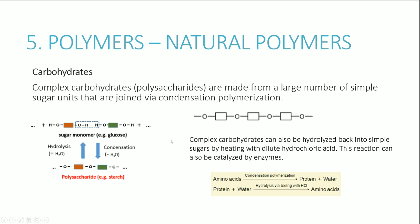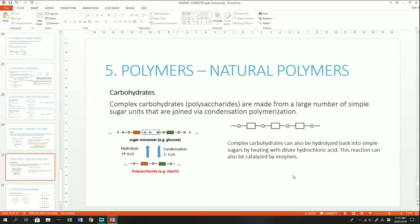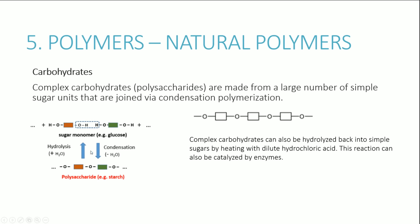Carbohydrates — specifically polysaccharides — are made from large numbers of simple sugar units joined through condensation polymerization. Sugar monomers have two hydroxyl (alcohol) groups. The OH group of one sugar reacts with the H from the OH group of another, releasing water and joining them together. This forms a large chain of sugars. You can convert polysaccharides back into simple sugars by hydrolysis, catalyzed by enzymes or heating with dilute hydrochloric acid.